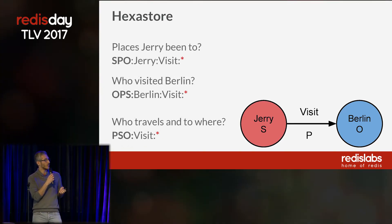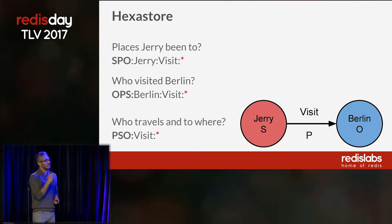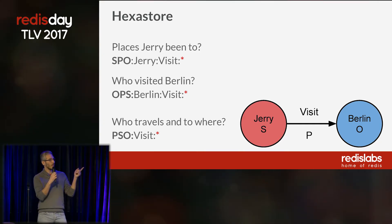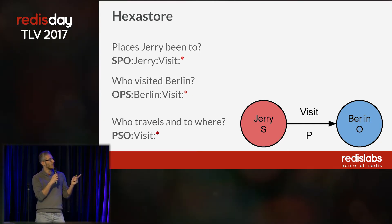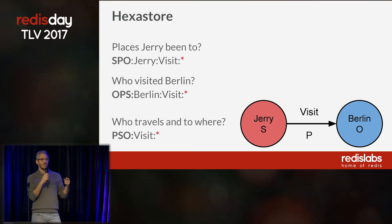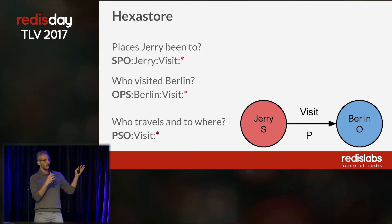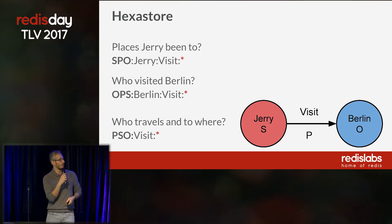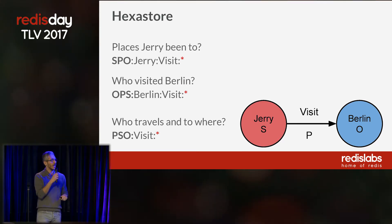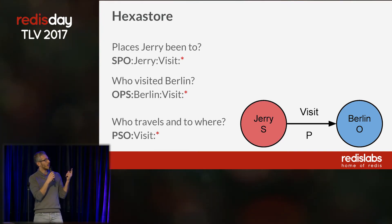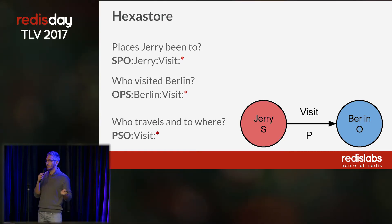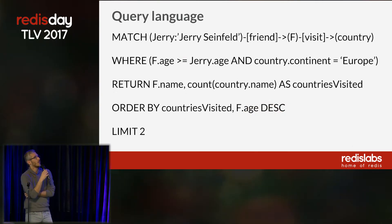Once we have those triplets, we can start asking questions. For instance, I would like to find all the places that Jerry has visited. I can look up in my hexastore for all strings with the prefix SPO Jerry visit and then whatever — the hexastore will retrieve all strings where Jerry has visited some country. I can go the other way around and ask who visited Berlin, simply by looking up the string OPS Berlin visit. Or I can find all the people who ever traveled.